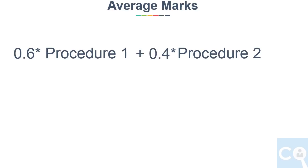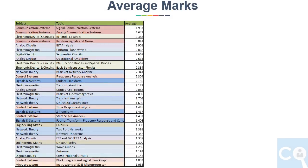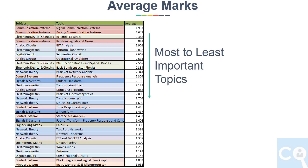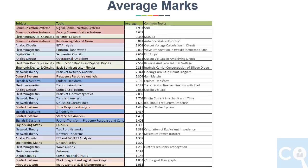Now take the average marks from both procedures, weighting the first procedure at 60% and the second at 40%, since we trust the first procedure more. This gives us normalized marks for each topic out of 85. Arranging this average from highest to lowest gives us the most to least important topics. If you add the first 32 topics from these 65 topics, you get 65.5 marks. Adding 15 marks for aptitude gives 80.5 marks. I have also gathered common concepts asked by IIT Madras from these topics, and the Excel sheet link will be shared in the drive — the link will be given in the description.